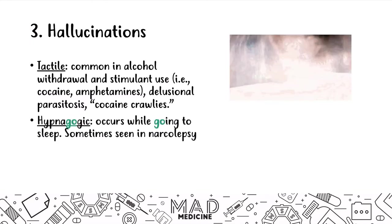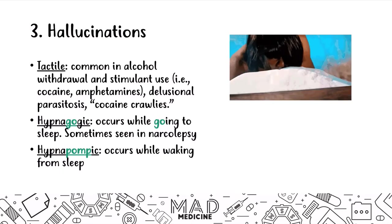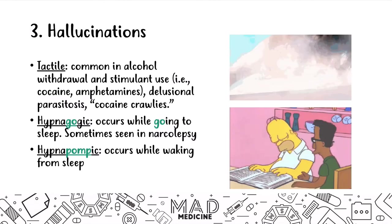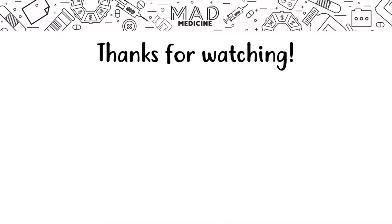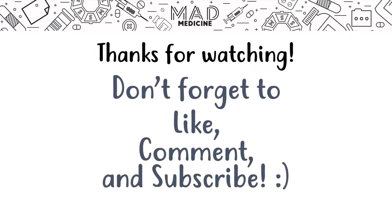Hypnagogic hallucinations occur when a patient is going to sleep, and are sometimes seen in narcolepsy. Hypnopompic hallucinations occur while waking from sleep. Those are the seven types of hallucinations you should know. This was a dense video, so I highly recommend you go through it one more time and review all the different types of delusions and hallucinations so you know them well for Step 1. You may be tested on these. Don't forget to like, comment, and subscribe, and hit that bell notification so you get notified every time we post a new video. Thank you so much and have a wonderful day.